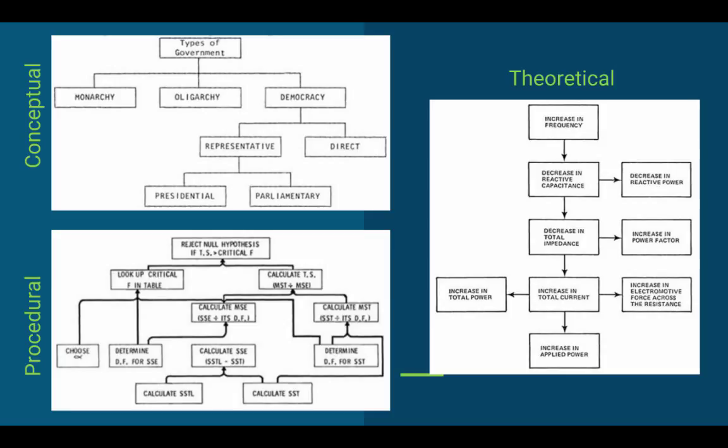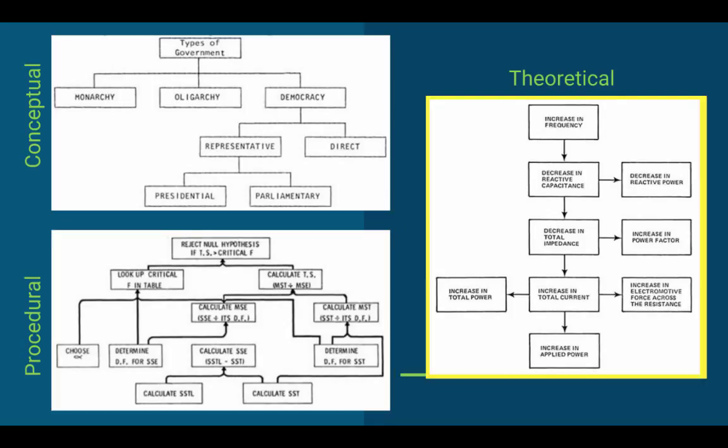One important thing about the elaboration theory is that initially, Reigeluth looked at three different knowledge structures. Conceptual, which contains types and kinds, and it can be tables or matrices of these. He also talked about procedurals, which contains steps. Sometimes they have to be done in order or steps to make decisions. And then there's theoretical, which shows relationships between principles. Because he recognized these three knowledge structures, he integrated these into the elaboration theory to be able to address all three of these knowledge structures. So he does talk about how epitomes and definitely the organization of content would be influenced by the type of knowledge structure you're trying to build for your students.